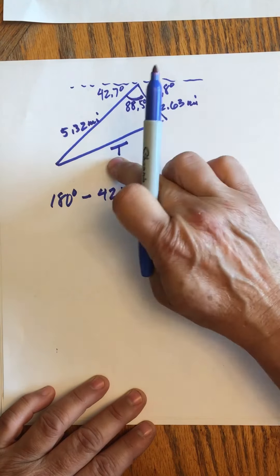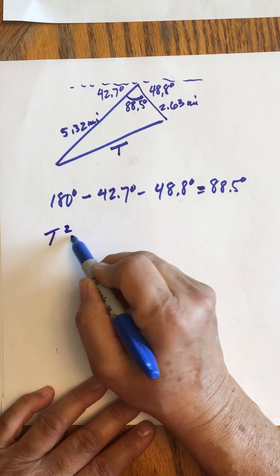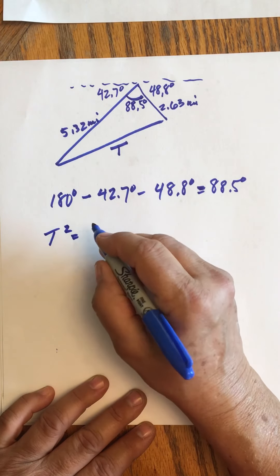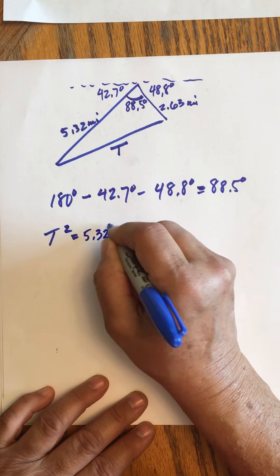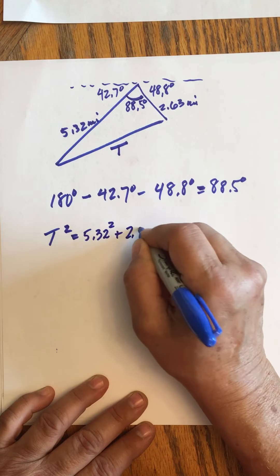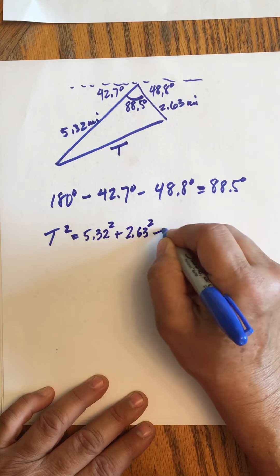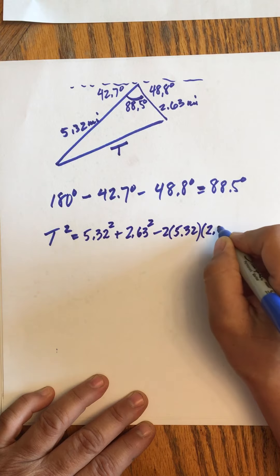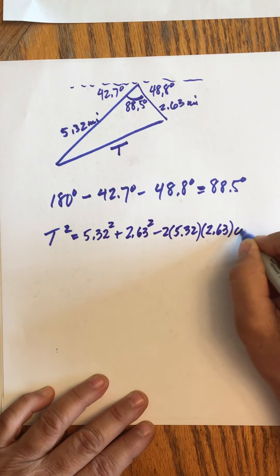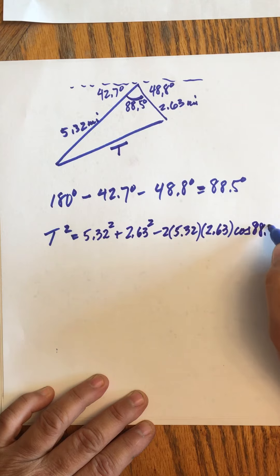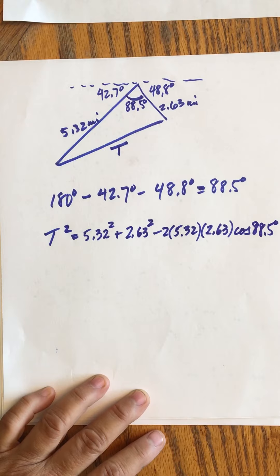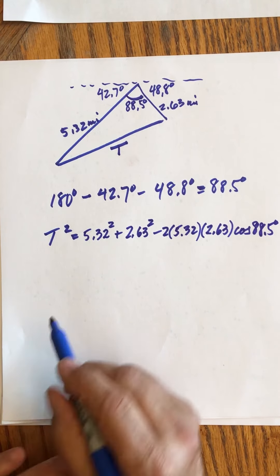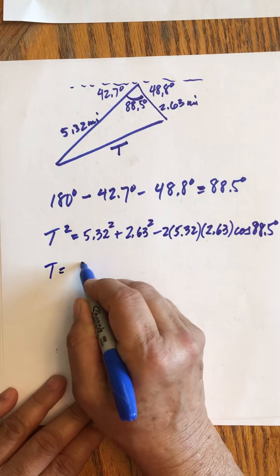This angle forms side t, so: t² = 5.32² + 2.63² − 2(5.32)(2.63)·cos(88.5°). Then t equals the square root of all of that.